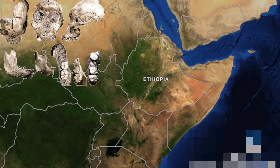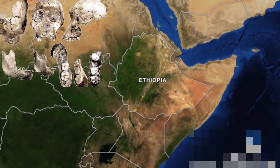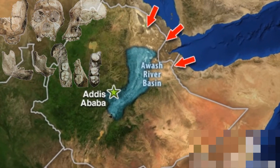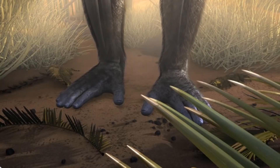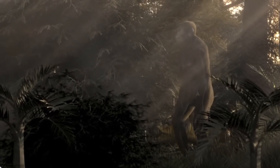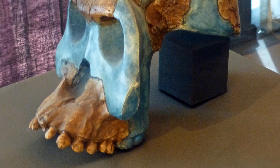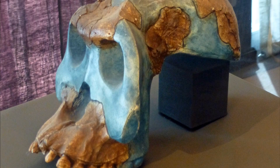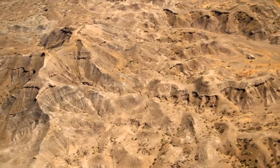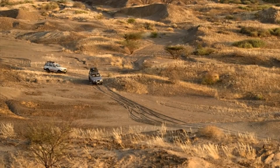Fossils of the species were mainly found from eastern Africa at the site of Bouri, Middle Awash, Ethiopia. Australopithecus garhi were also thought to be more terrestrial.